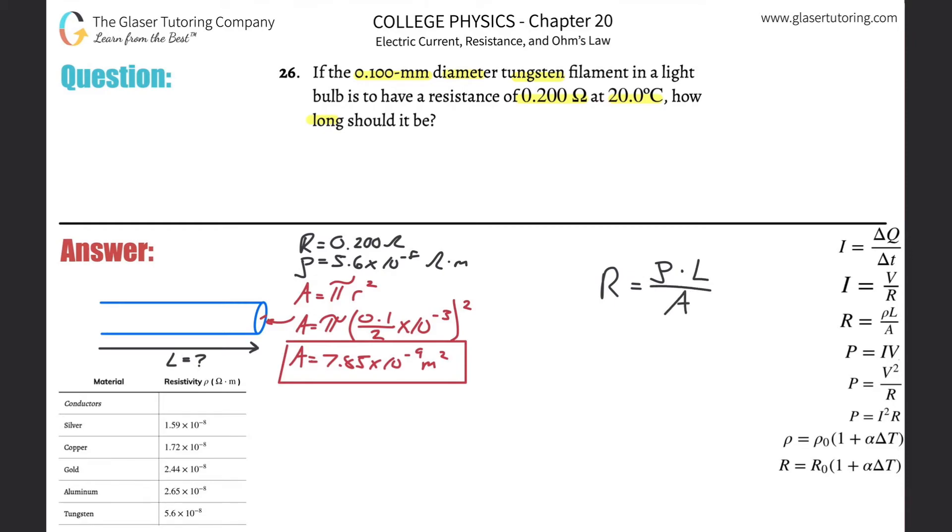So we're after length, right? So just solve this for L. Cross multiply the A on up, cross multiply the resistivity on down, and here's your little formula.